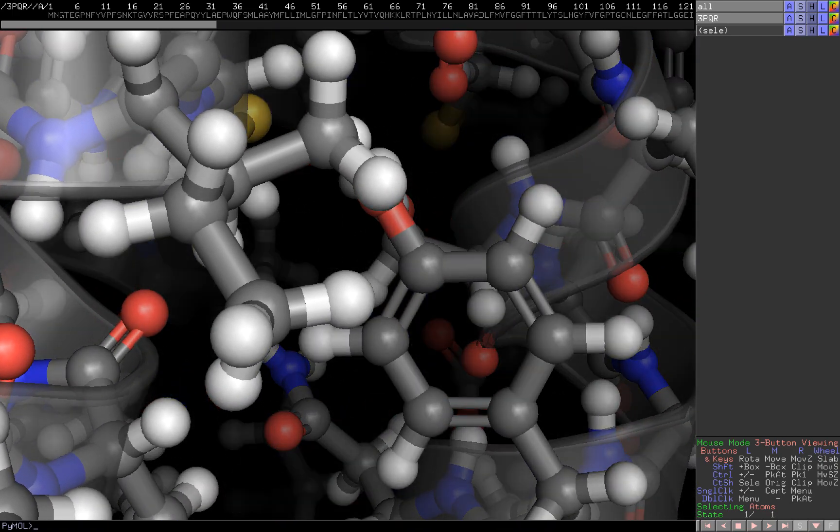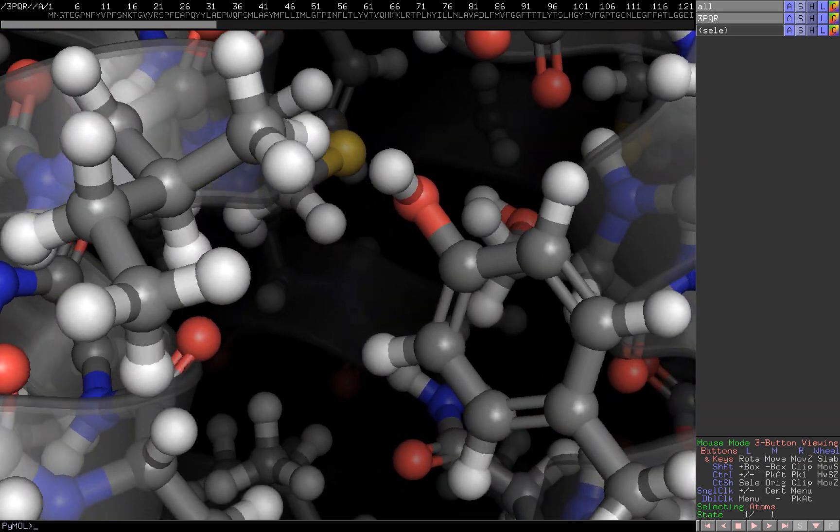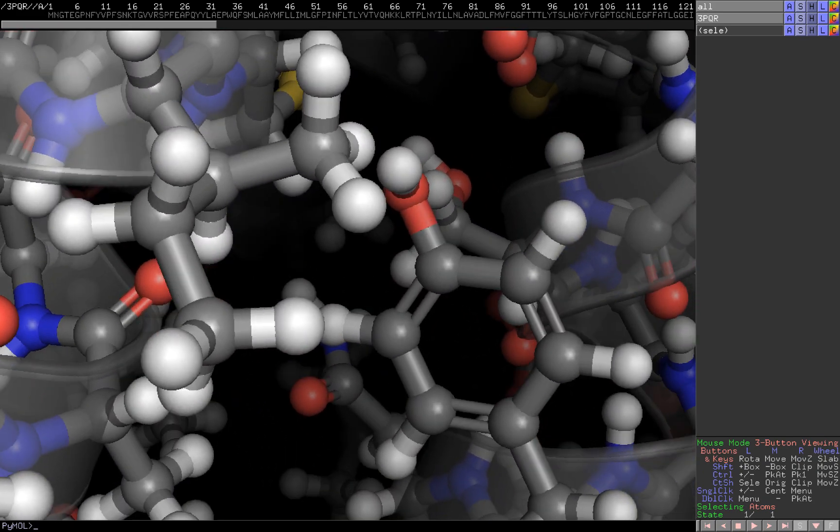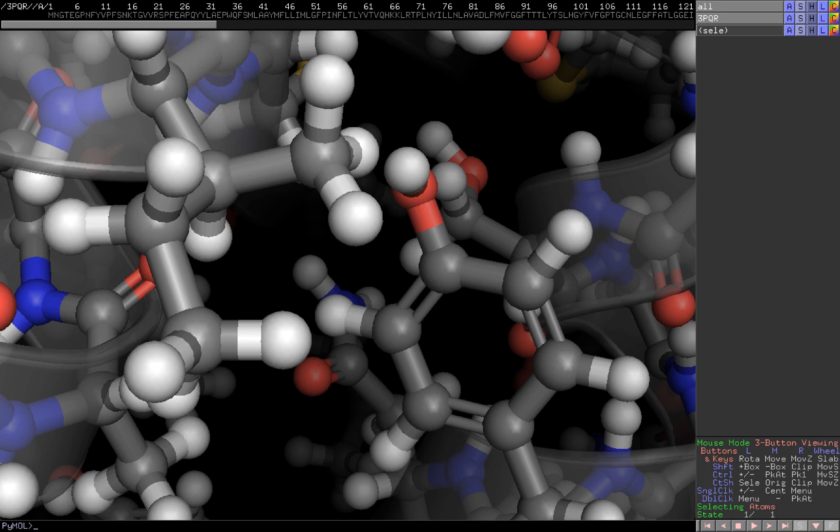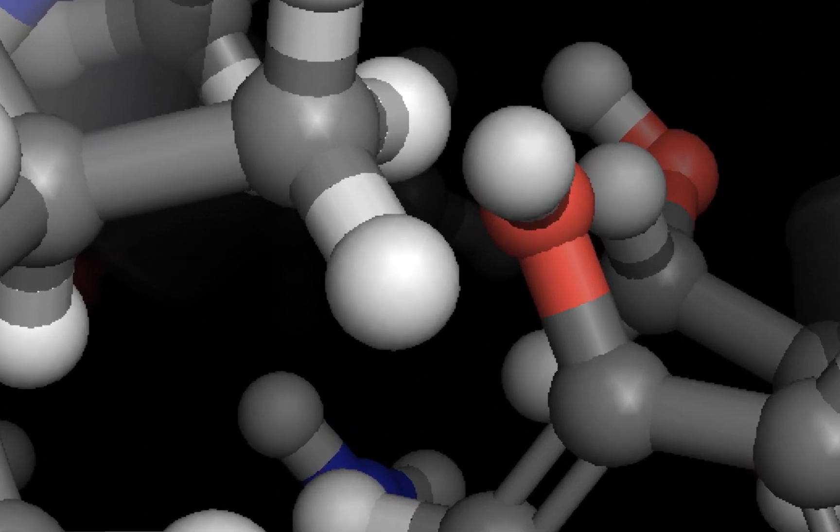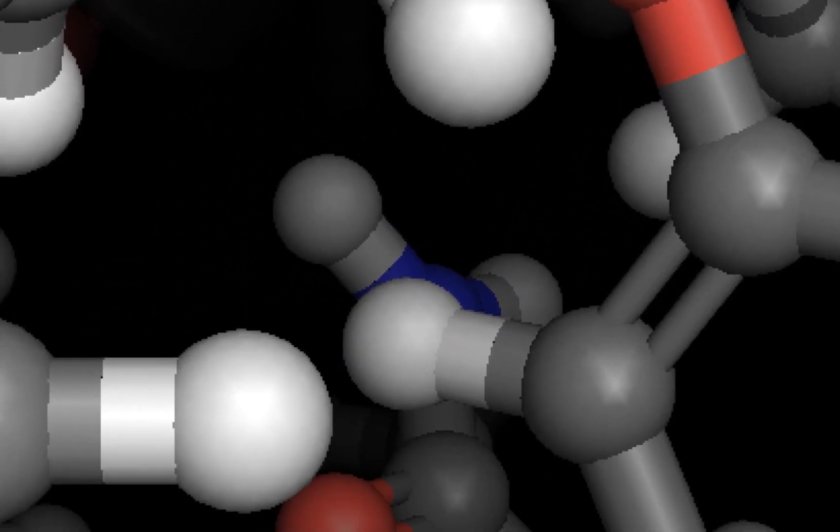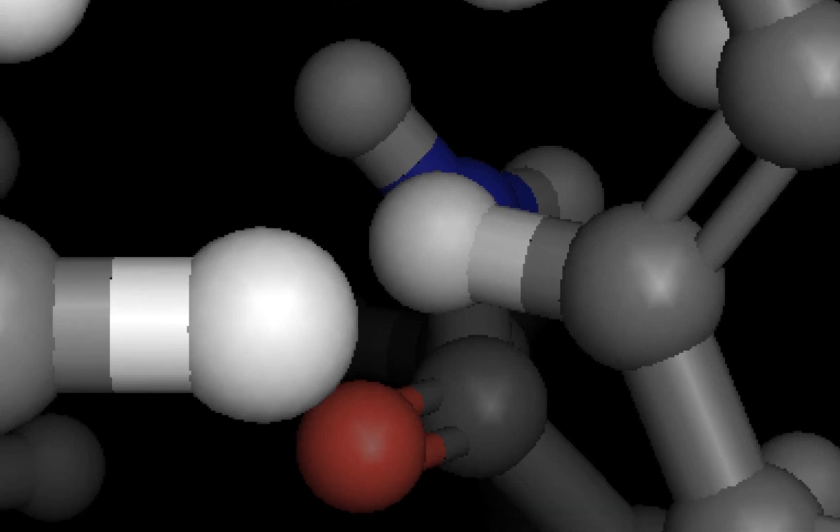Rather than simply telling my students the rules of bonding, I like to send them into a protein on a molecular field trip to discover the rules of bonding themselves. Students eventually will notice that the white hydrogen atoms always have only one bond. Everywhere we look we see white hydrogen atoms connected to only one other atom.